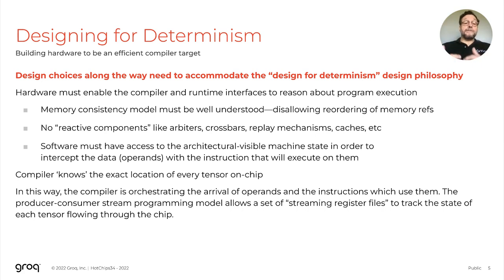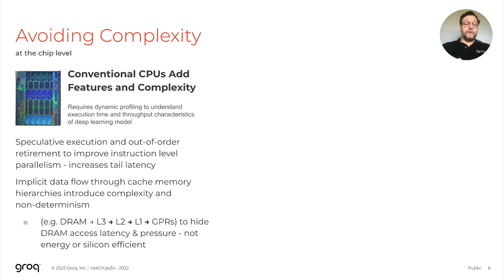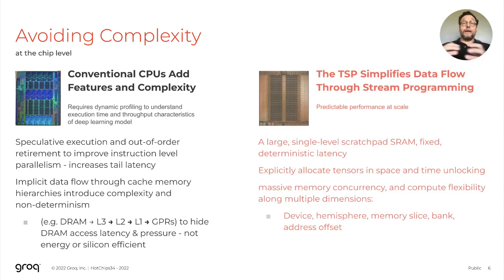Designing for determinism requires that we make some design choices and really adhere to a design philosophy. We had to make sure that the hardware was completely controllable by the compiler — not about abstracting away the details of the hardware, but about explicitly controlling the underlying hardware. The compiler has an oracular view of what the hardware is doing at any given cycle. Unlike traditional CPUs that embrace aggressive out-of-order execution and speculative execution, we've taken a different approach. We use just a single flat scratchpad memory that's 220 megabytes, and we allocate tensors in that memory explicitly so the compiler knows where the tensors are and how they're moving on-chip.